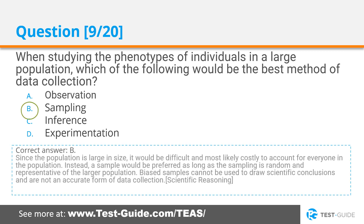Correct answer B. Since the population is large in size, it would be difficult and most likely costly to account for everyone in the population. Instead, a sample would be preferred as long as the sampling is random and representative of the larger population. Biased samples cannot be used to draw scientific conclusions and are not an accurate form of data collection.